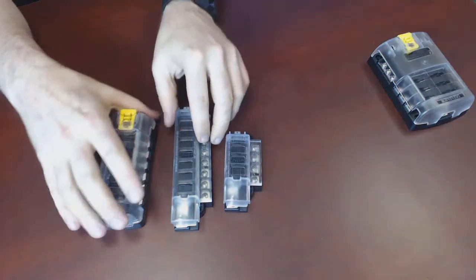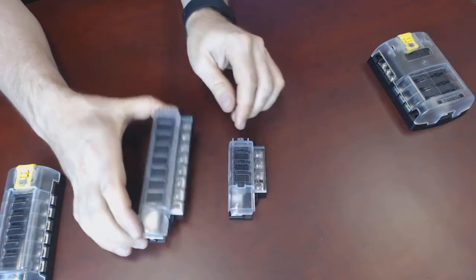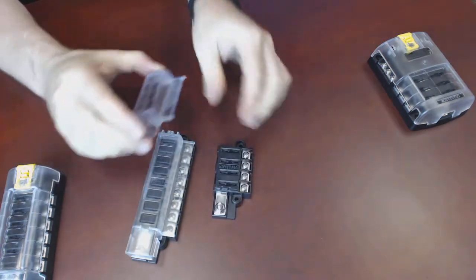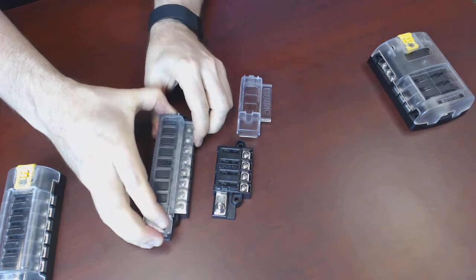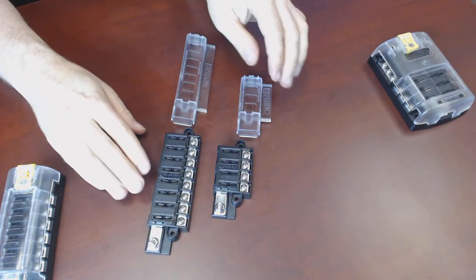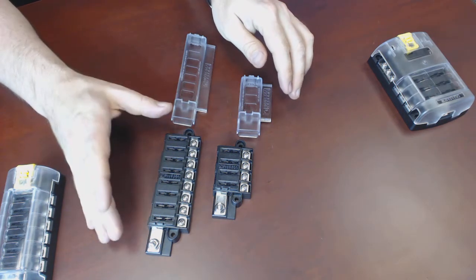These next two are the 5045 and 5046. So the 5045 is common power in and four power leads out through fuses, and this is the 5046, the same thing, common power in but eight out.